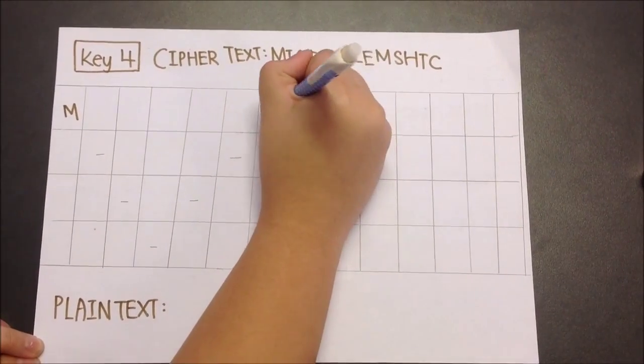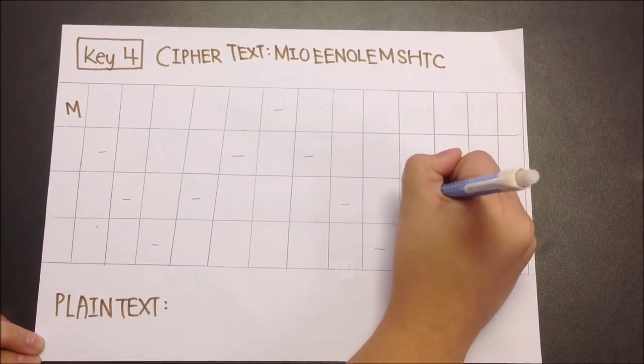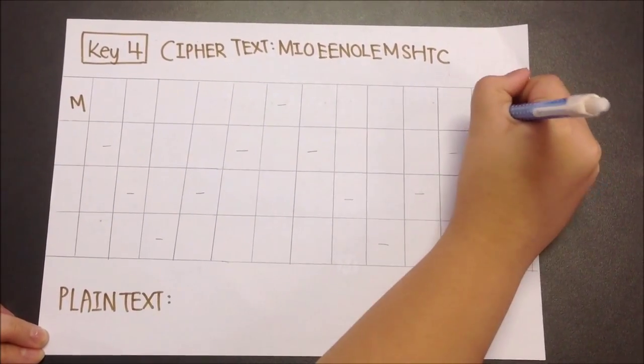After that, place dashes upwards until the first row. Continue doing this until there are no longer any more columns to fill.